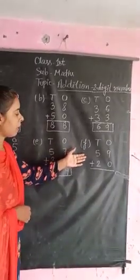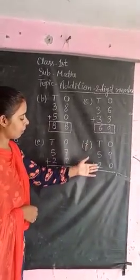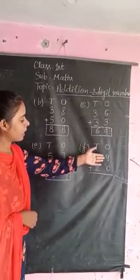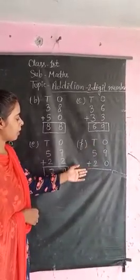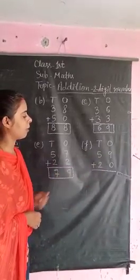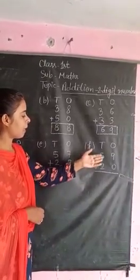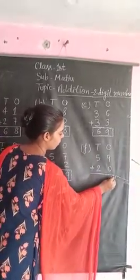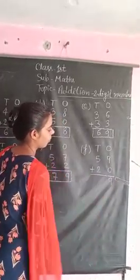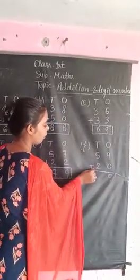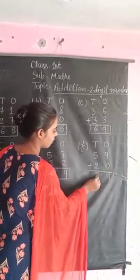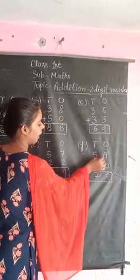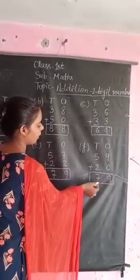Next, addition number is 59 plus 20. 59 plus 20. Addition is 9 plus 0 equals 9, 5 plus 2 equals 7. 59 plus 20 equals 79.